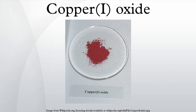Cu₂O degrades to copper oxide in moist air. Cu₂O crystallizes in a cubic structure with a lattice constant L = 4.2696 Å. The Cu atoms arrange in an FCC sublattice and the O atoms in a BCC sublattice. One sublattice is shifted by a quarter of the body diagonal. The space group includes the point group with full octahedral symmetry.